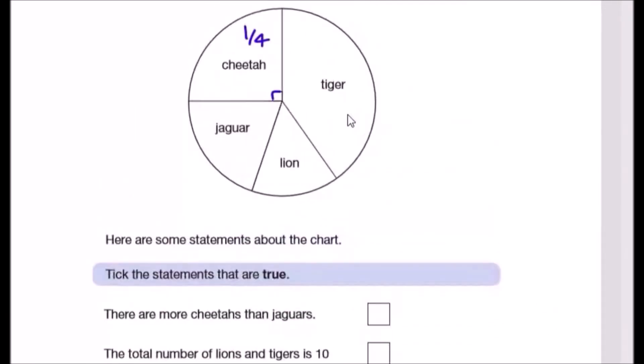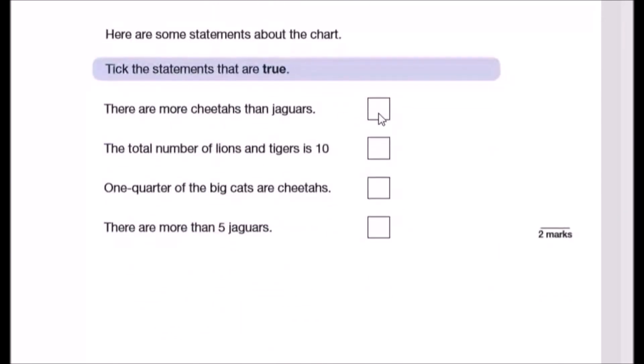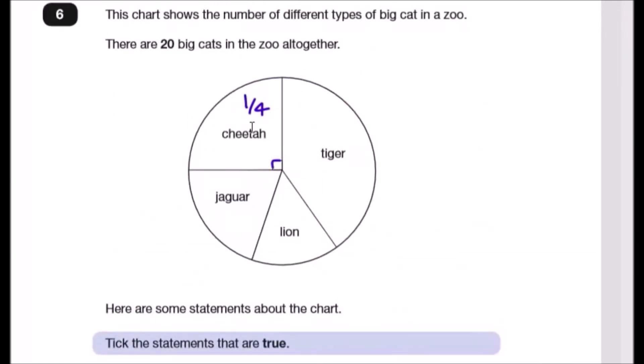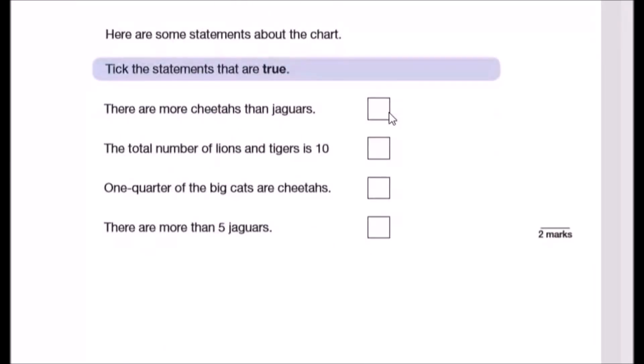Here are some statements about the chart. Tick the statements that are true. Looking over here it says there are more cheetahs than jaguars. Well, let's see. Yep, I'd say so, because one quarter of cheetahs is five and to be honest this has a bigger share than that, so I give that a tick. The total number of lions and tigers is 10.